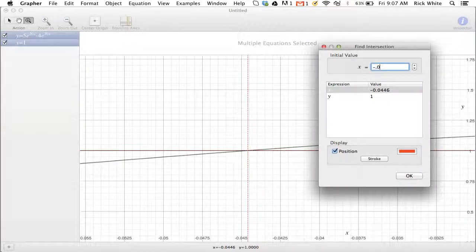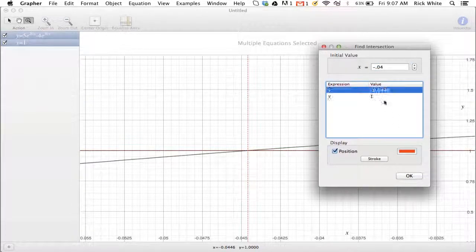If it doesn't give it to you exactly, you could estimate it, so it'll go negative 0.04, it's somewhere around there, and just push enter, and it should give it to you, and it already has for me.